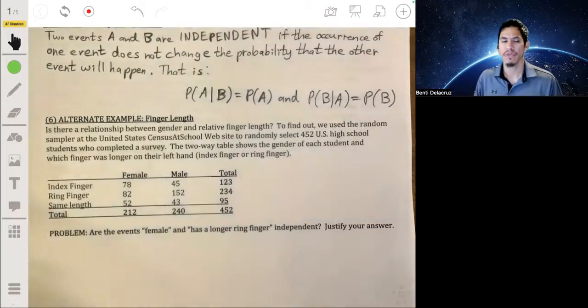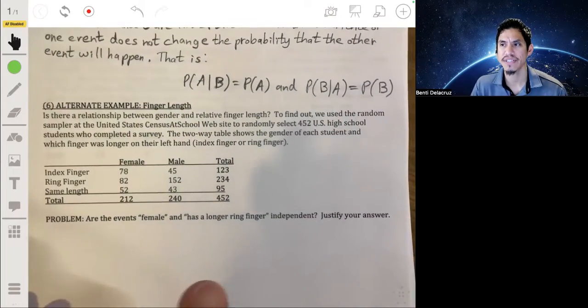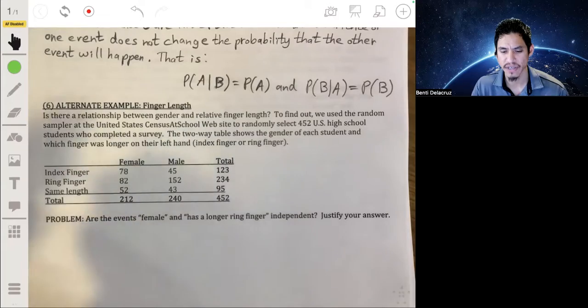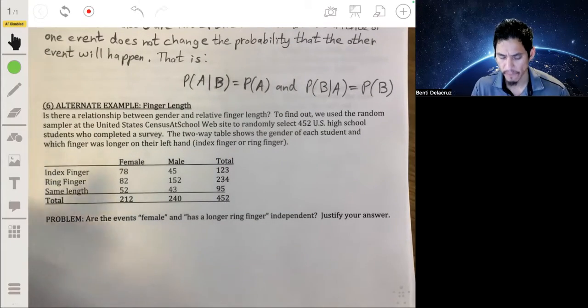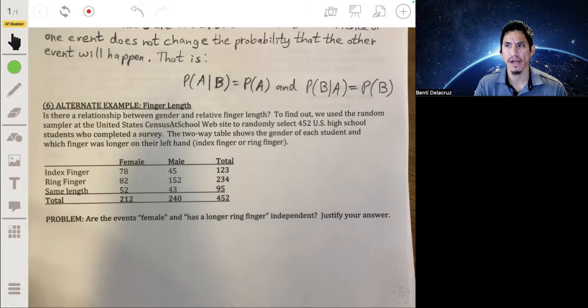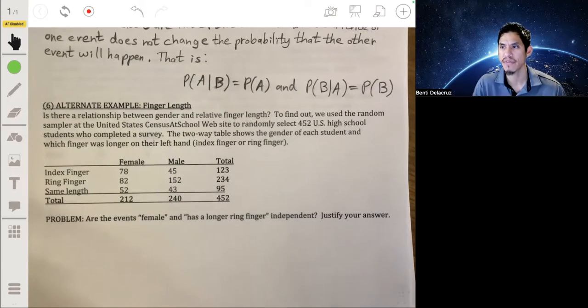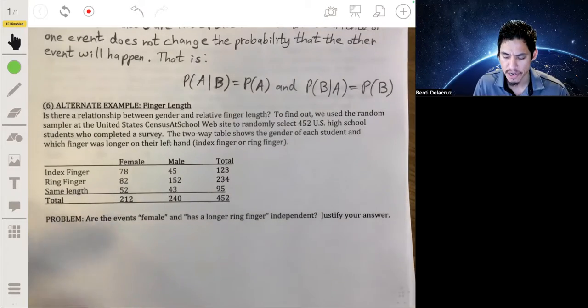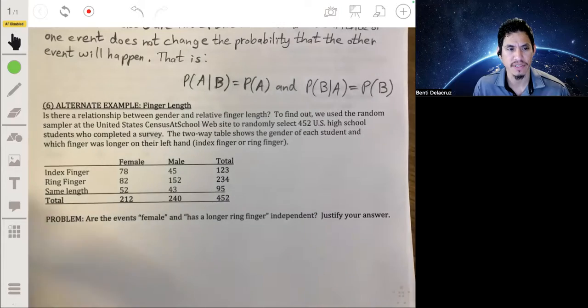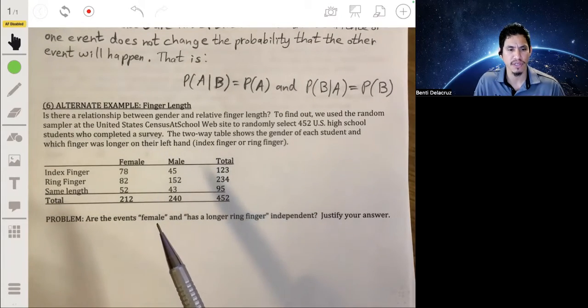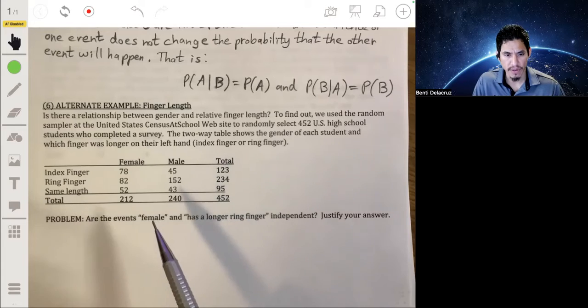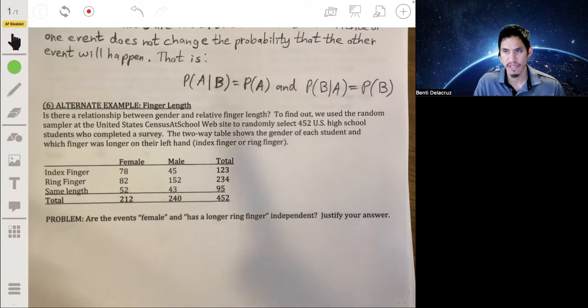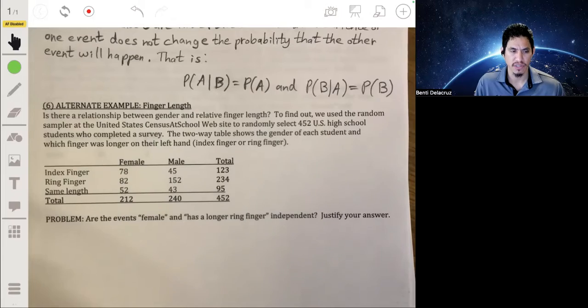Justify your answer. Okay, so another way to think about independence is just ask yourself, is there a relationship between these two things? We'll learn in another chapter dealing with what's called a correlation, if you haven't maybe covered that chapter yet, depending on what course you're in and depending on how your class is structured. But think of independence in the same sense as, are two things related? So in this case, you want to see is there a relationship between being a female and having a longer ring finger? So is there a relationship between gender and which finger is longer?